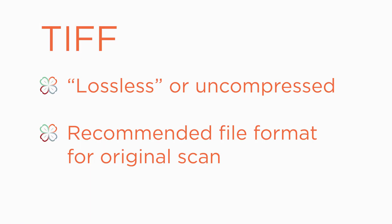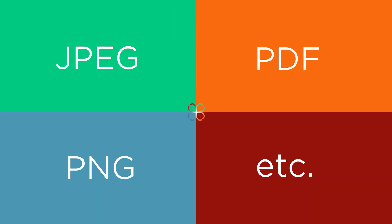A TIFF file format by default is lossless or uncompressed. This is the recommended file format for your original scan because it will keep all the information in your file every time you save it. Once you have a TIFF, you can save it as all kinds of compressed formats, like a JPEG, PDF, or PNG, for other purposes.